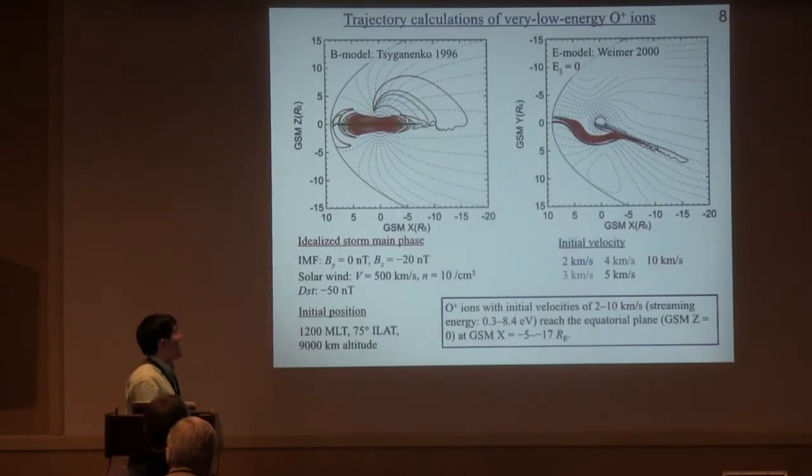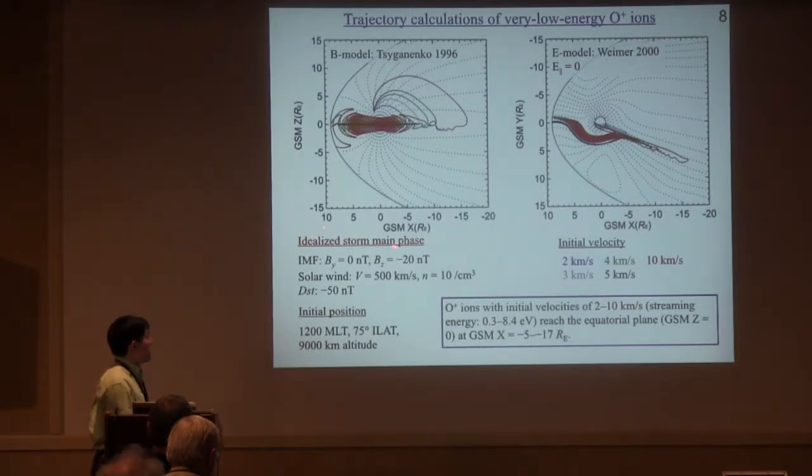We calculated a particle trajectory based on the Akebon observation using Tsyganenko and Weimer model, assuming no parallel electric field. Since this period, no solar wind data is available, so we assumed an idealized storm main phase with a total IMF of 20 nanotesla and a solar wind velocity of 500 km per second, density of 10 per cubic centimeter. We launched ions from the dayside at 9000 km altitude.